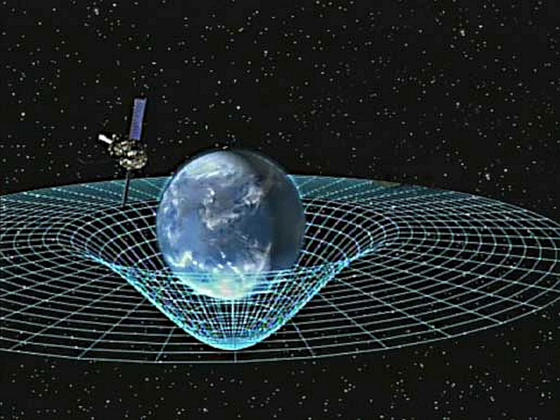Curved space often refers to a spatial geometry which is not flat, where a flat space is described by Euclidean geometry. Curved spaces can generally be described by Riemannian geometry though some simple cases can be described in other ways.